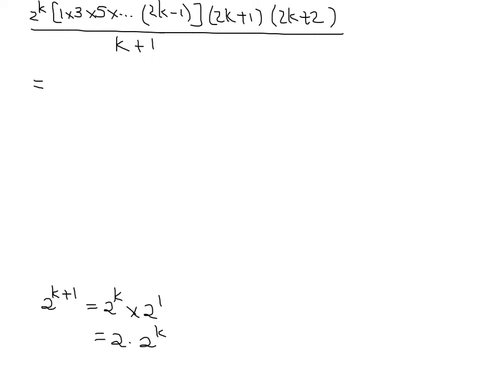Well, if you have a look at it, I've got k plus 1 here. And I've got 2k plus 2 here. So if I factorize 2k plus 2, in red is as good as any.